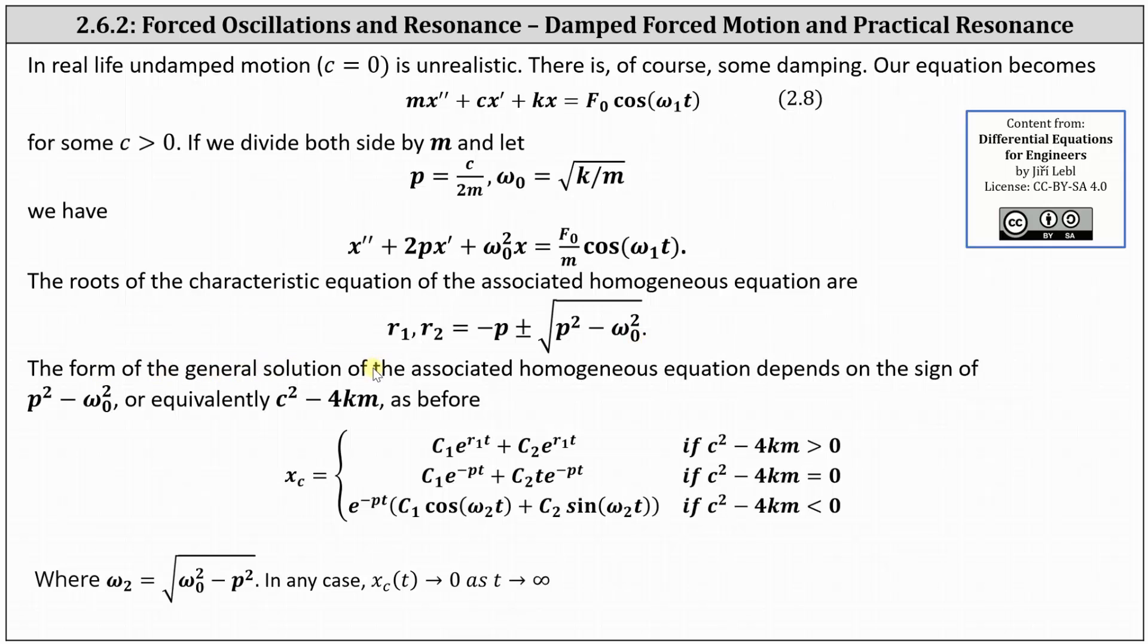Recall the form of the general solution of the associated homogeneous equation, which also gives us the complementary solution, depends on the sign of the radicand, which in this case should be P squared minus the square of omega sub zero, or if we're using the form of the original differential equation, the sign of C squared minus four Km.